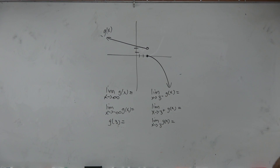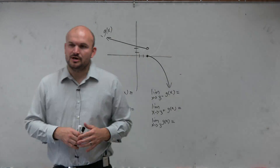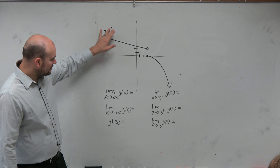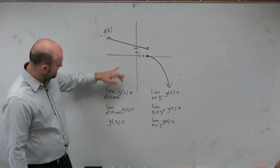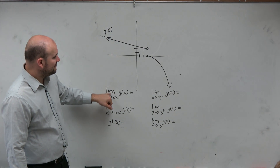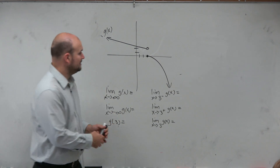So in this example, the first thing I want to do is talk about end behavior again. Let's go through the end behavior portion. So the first thing — this function is g of x, and we're finding the value that the function is approaching, g of x, as x approaches infinity.